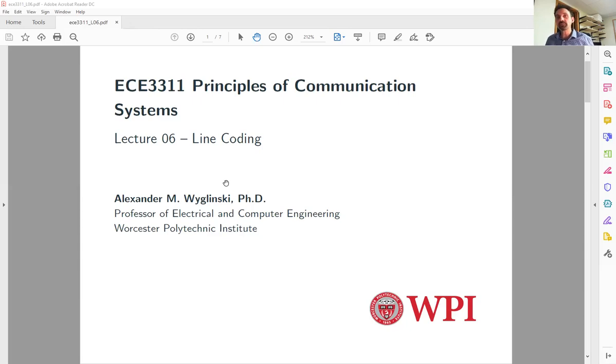Line codes are a way of sending digital information in a baseband manner just by sending rectangular shaped amplitude values over unit periods of time consecutively, and each one of those shapes represents either a binary 1 or a binary 0.